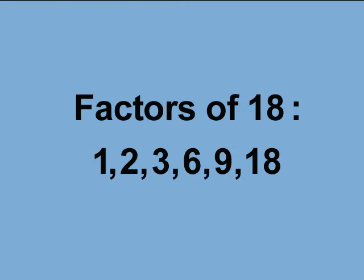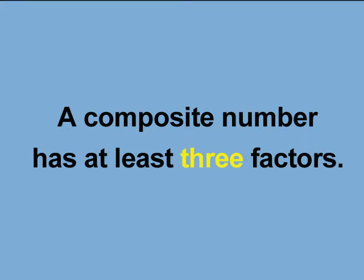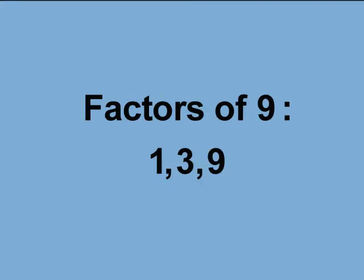The number of factors determines the type of number. A composite number has at least three factors. Let's look at an example. The number 9 has these factors: 1, 3, 9. It is a composite number because it has three factors.